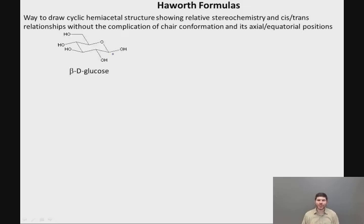Here is our familiar structure of beta-D-glucose in its chair conformation with all of the substituents in their equatorial positions, and here is the Haworth formula, also called a Haworth projection, of the same molecule.